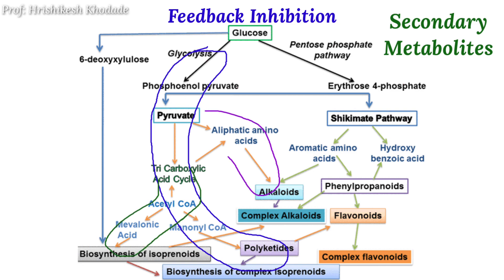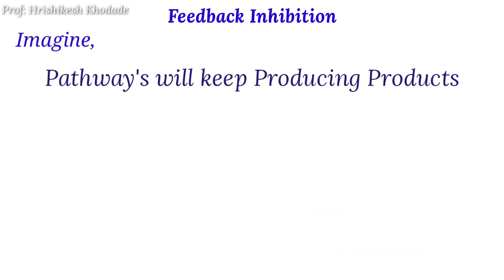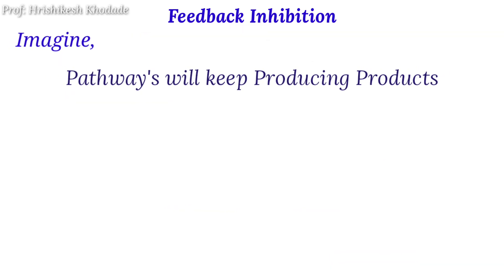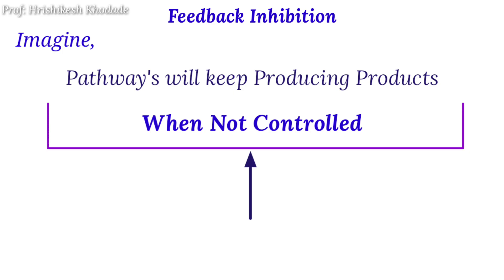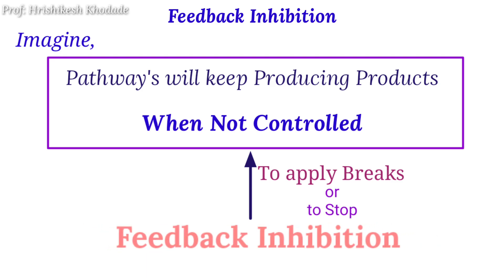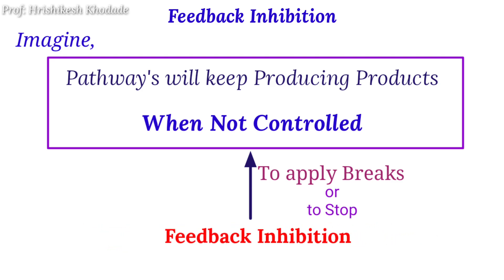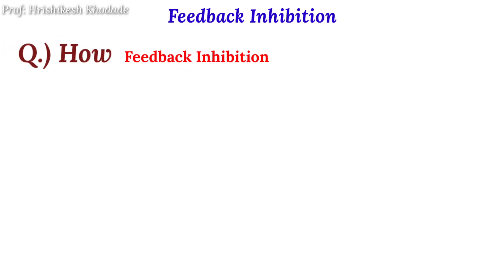It is just an example to understand how an integrated pathway looks. But imagine these pathways will keep producing the product when not controlled. So in such a scenario, to apply a brake on such pathways, feedback inhibition plays an important role. The question is: how does feedback inhibition control the pathways of the cell?